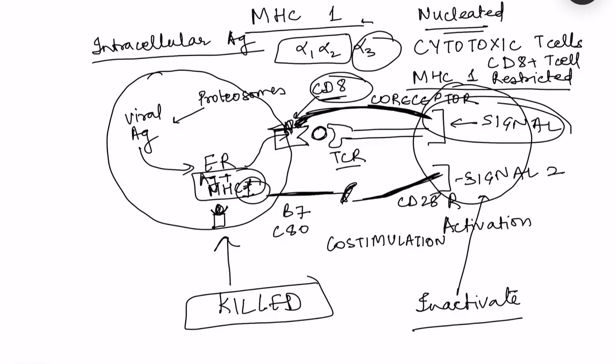Regarding heterogeneity: T cells can recognize many different antigens because of diversity generated at the genetic level during T cell production. Similarly, MHC1 can present different types of antigens. Importantly, no two individuals - except identical twins - have the same complex of MHC proteins, and this is clinically relevant because differences in MHC proteins cause graft rejection in organ transplantation.